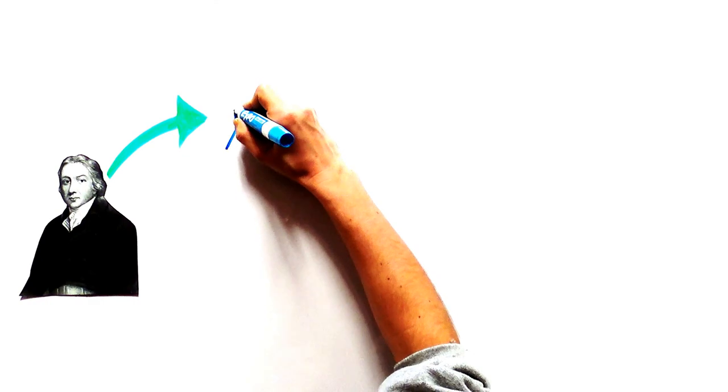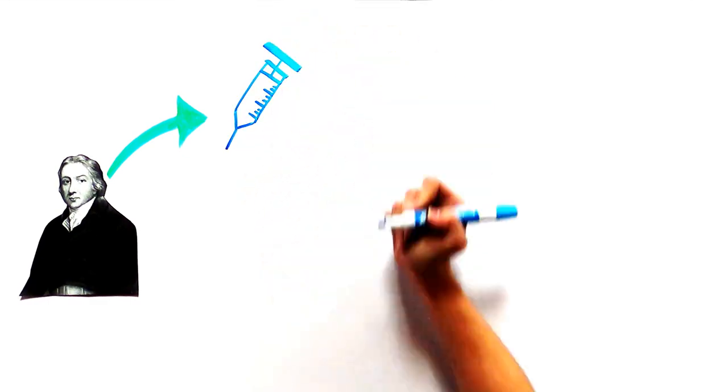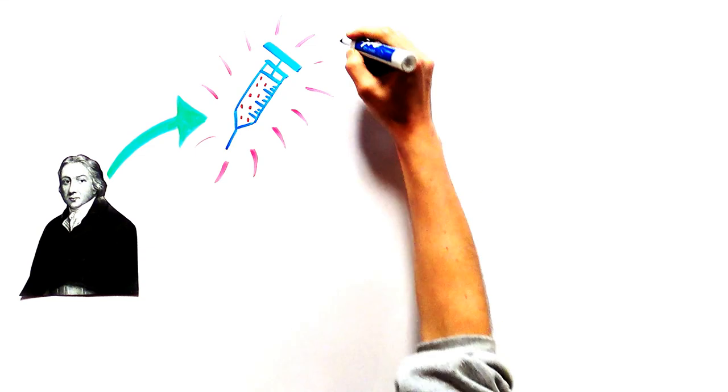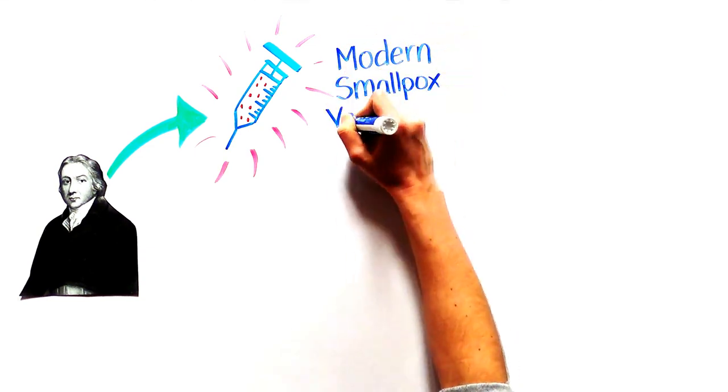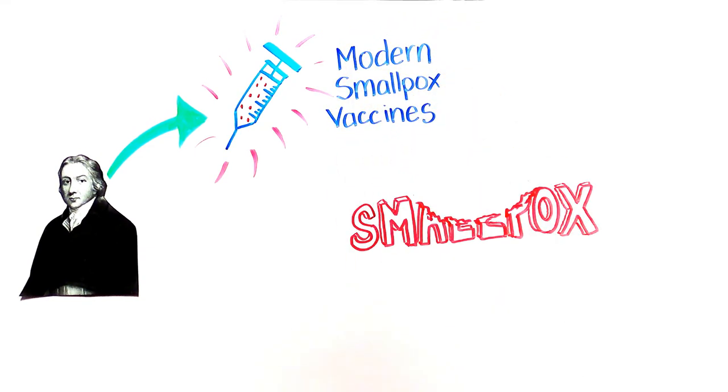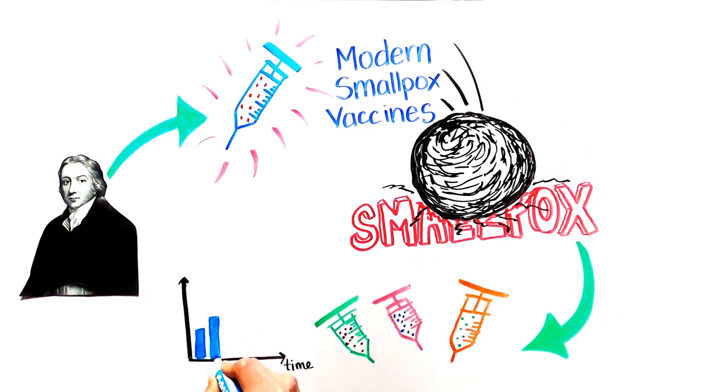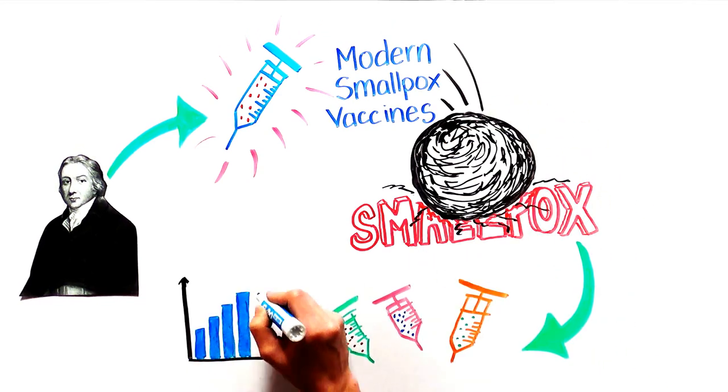Although injecting someone with pus caused by cowpox might sound gross, Jenner's discovery ultimately led to the development of modern smallpox vaccines and wiped out smallpox, an amazing public health achievement. It was also the beginning of more vaccination discoveries and development.